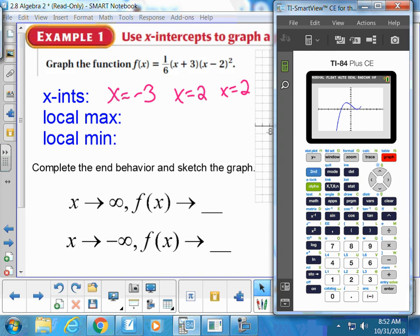So it's crossing through at negative 3, that's a single solution, and it has a turning point at 2, so that's a double solution. We talked about double solutions a few days ago.